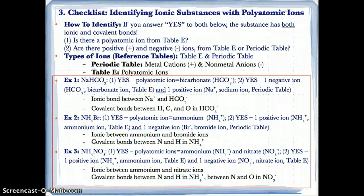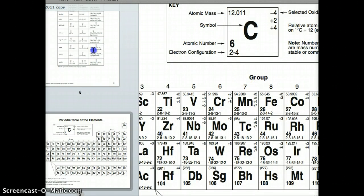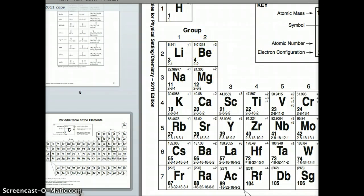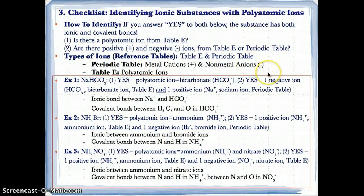Now let's talk about how to identify ionic substances with polyatomic ions. Here's a checklist: if you answer yes to both of these questions, the substance has both covalent and ionic bonds. Question one: is there a polyatomic ion from Table E? Question two: are there positive and negative ions from Table E or the periodic table? On Table E you can find polyatomic ions, and on the periodic table you can find metal cations (positive) and non-metal anions (negative). For example, Li+ is a positively charged metal cation, and O2− is a negatively charged non-metal anion.